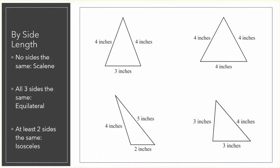Let's work together to identify these triangles by the lengths of their sides. In the first triangle you'll see that we have two sides that are marked as four inches each. If two sides are the same, that means this triangle is isosceles.